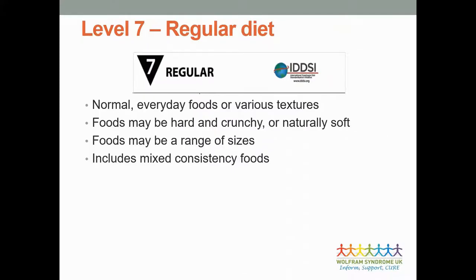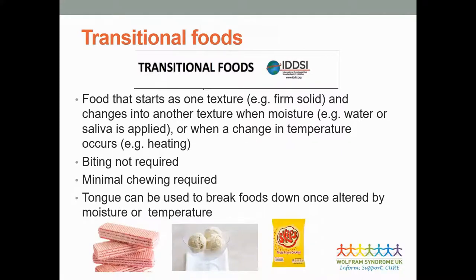Level seven is your regular diet - normal everyday foods of various textures, which could be hard and crunchy or naturally softer, with no size limit and mixed consistencies. There is also a group of foods labelled transitional food items - these start as one texture, firm or solid, and change to another texture when moisture such as water or saliva is applied, or when there is a change in temperature as the food warms in your mouth. An example is certain crisps like Skips or Quavers, which melt down without needing to be chewed.